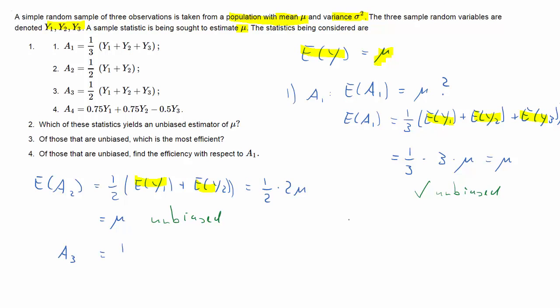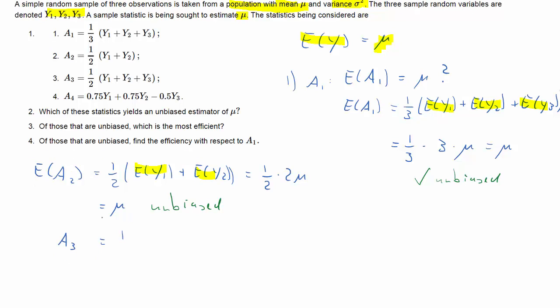What about the third estimator? Here we have the sum of all three observations but this time we don't multiply with 1 over 3 but only 1 over 2. So if we want to calculate the expectation of this we will follow the same pattern. It's going to be 1 over 2 times the sum of the individual expectations. They of course will all be mu so it's 3 times mu in the parenthesis and therefore our expected value of A3 is 1.5 times mu and therefore A3 is biased. The expectation of A3 is unequal to mu.